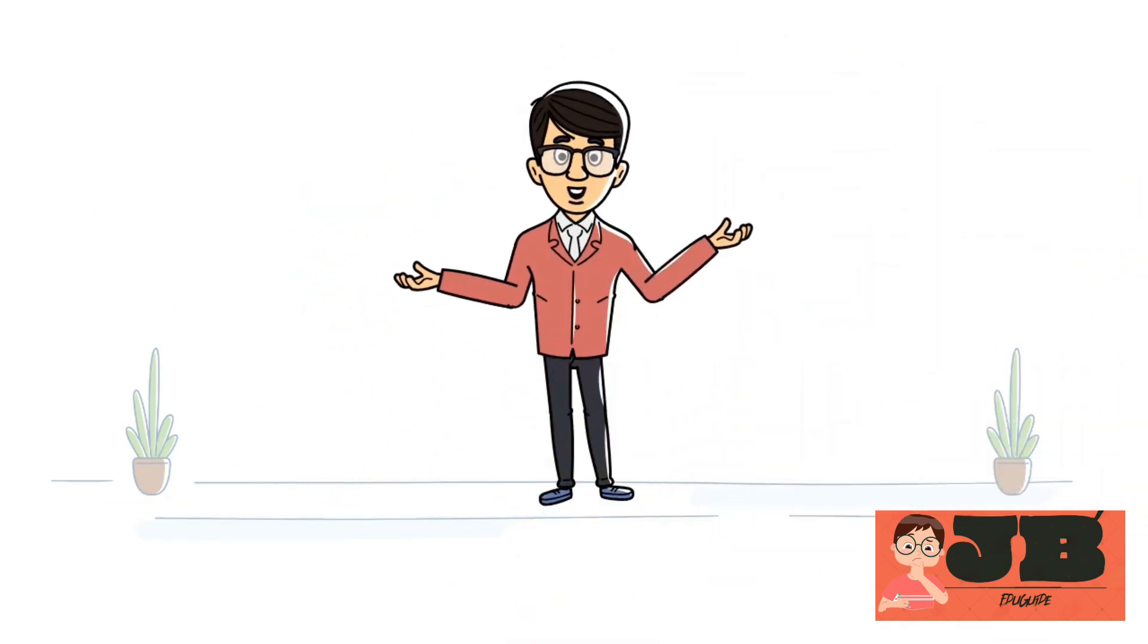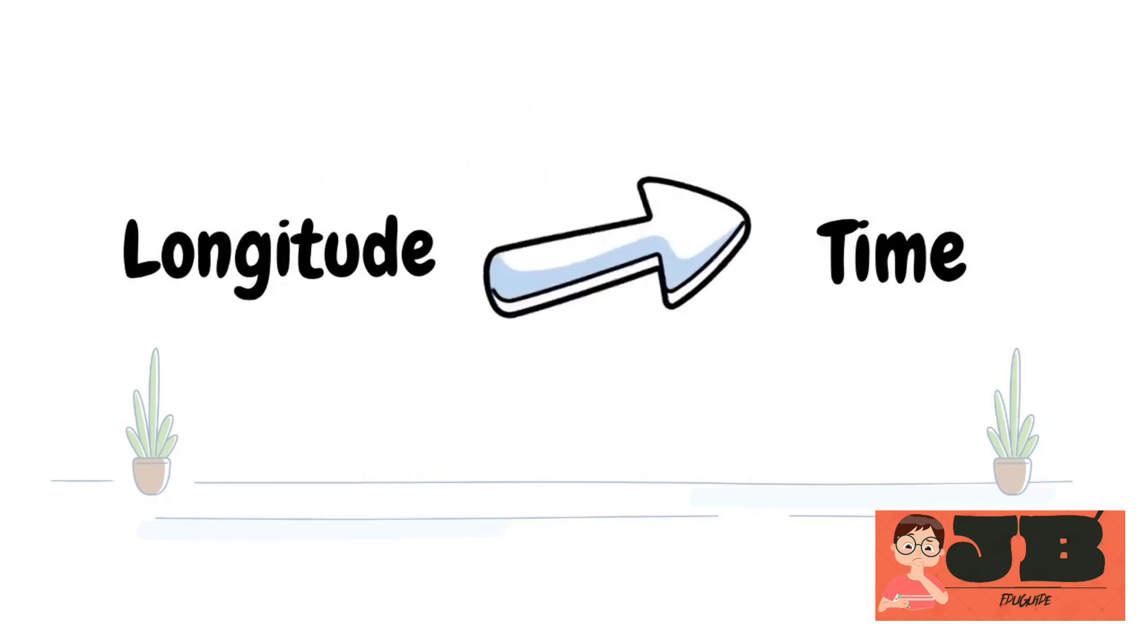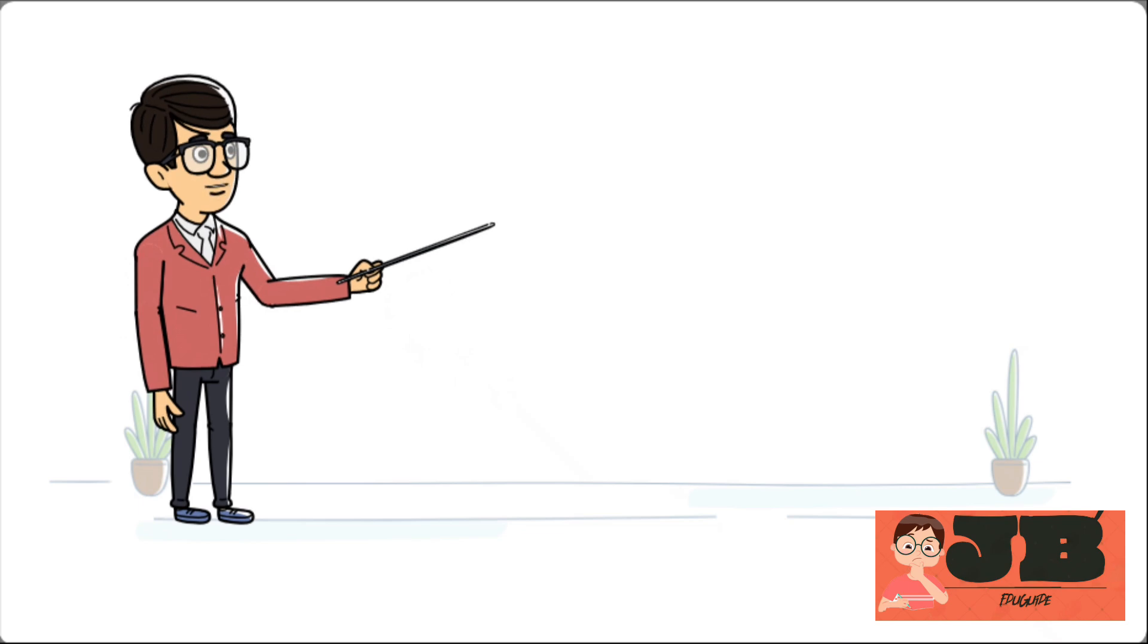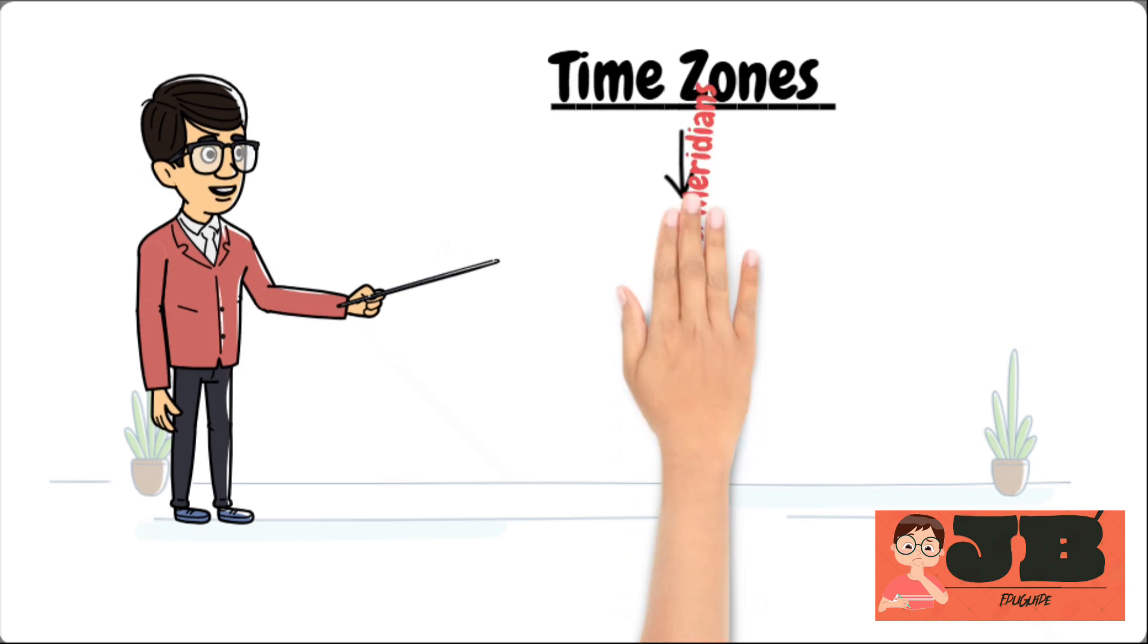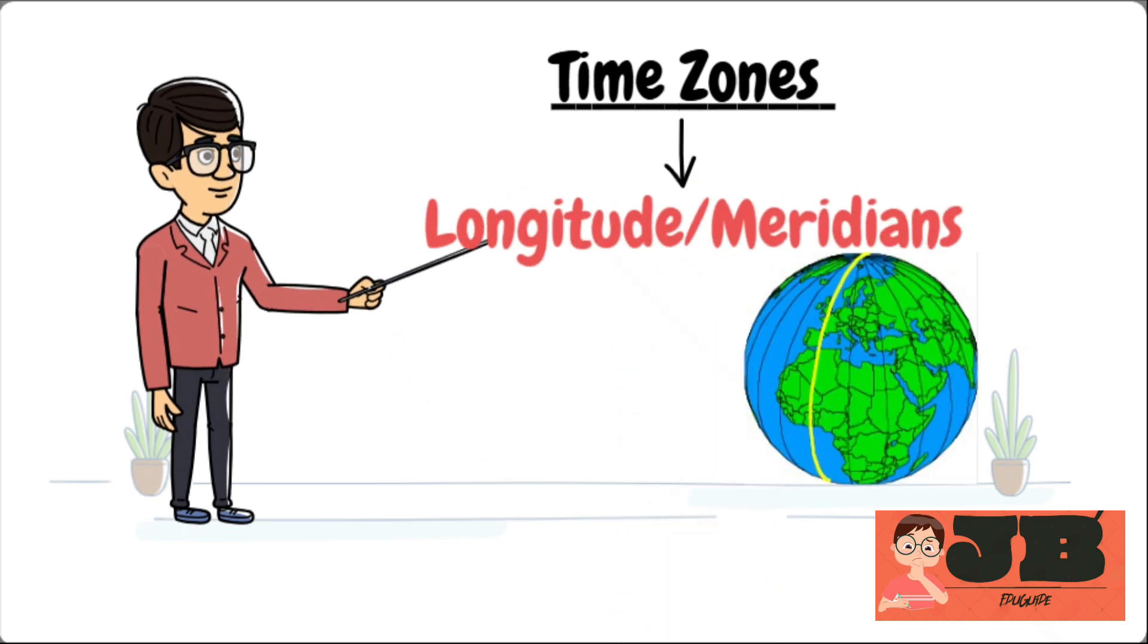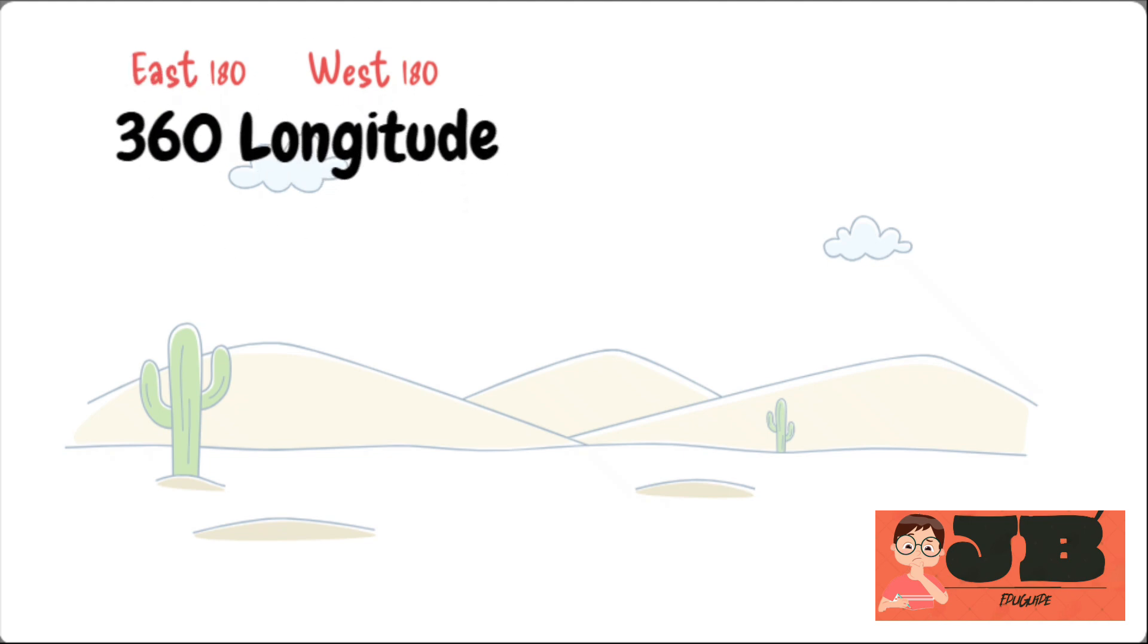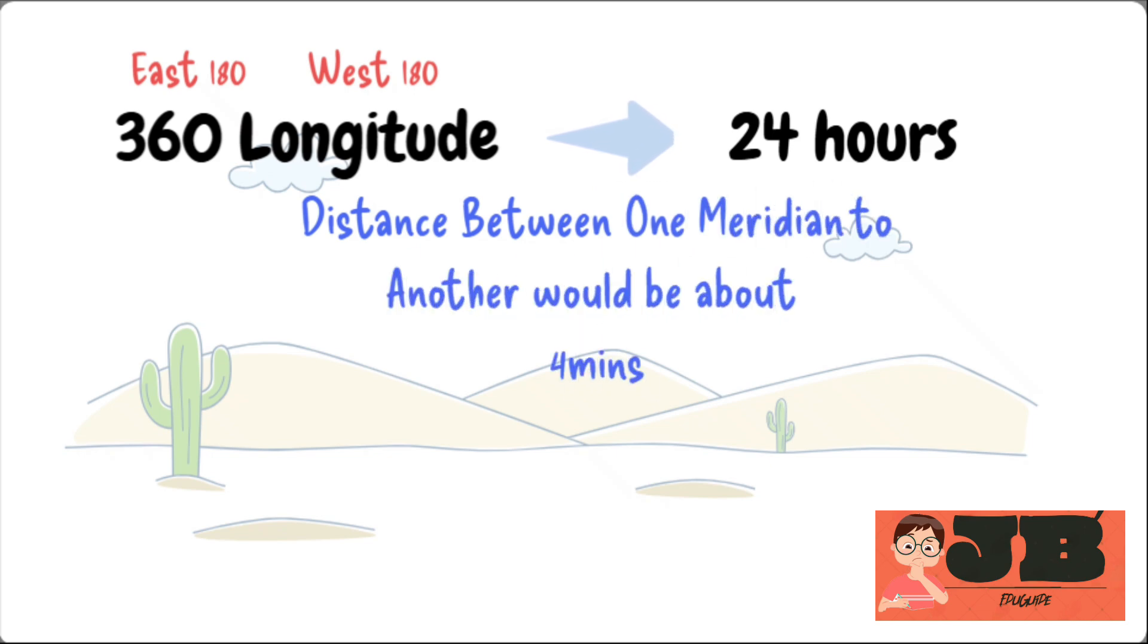Dear students, earlier we have discussed that the longitude represents time. So let's understand about time zone. Most important and interesting part of the chapter is time zones. To understand time zones, first understand the longitudes also known as meridians. There are 360 longitudes of imaginary lines from zero degrees longitudes to 180 degrees longitudes, and from 180 degrees longitudes to zero degrees longitudes in a circular motion, east to west. So in total 360 longitudes. The distance between one longitudes to another is about four minutes. It means the distance between 15 meridians is one hour.